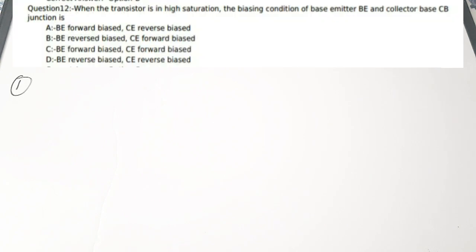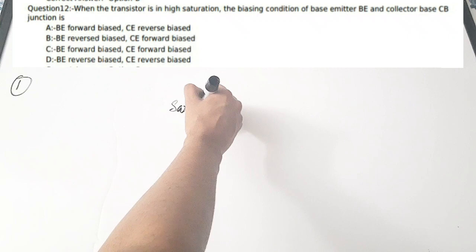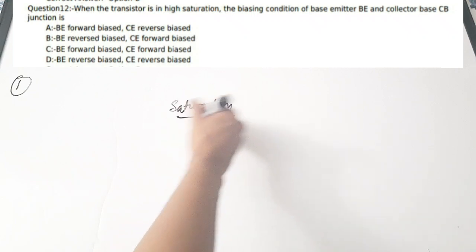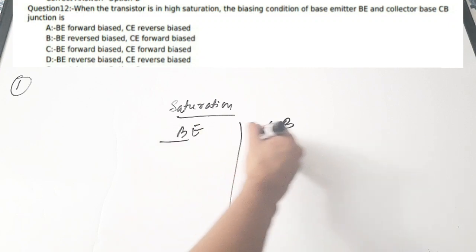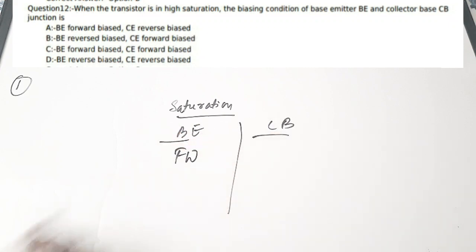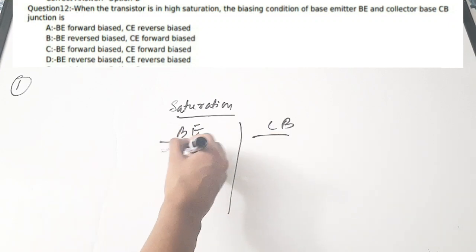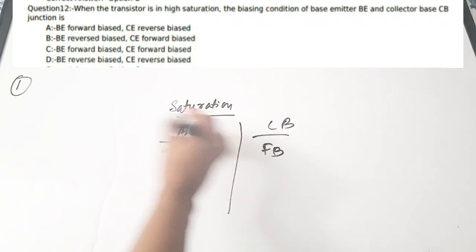The first question: when the transistor is in high saturation condition, what is the biasing condition of the base-emitter and collector-base junctions? For the saturation region, both junctions — base-emitter and collector-base — are forward biased. We write it as FB (forward bias) and FB (forward bias).